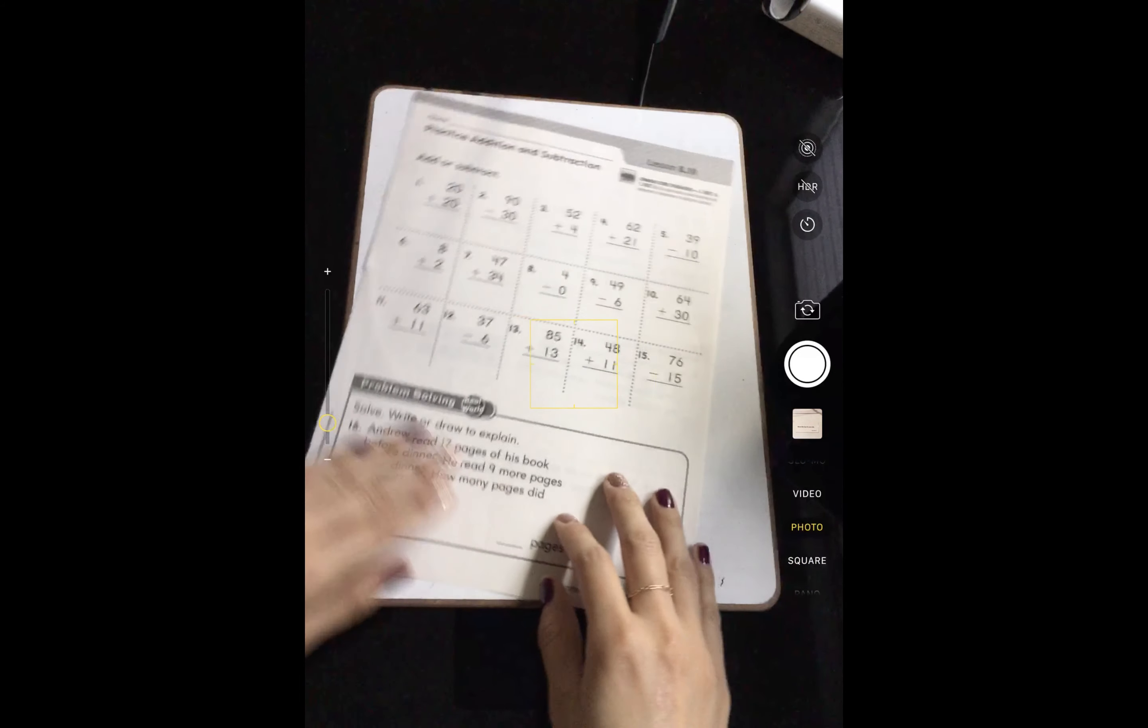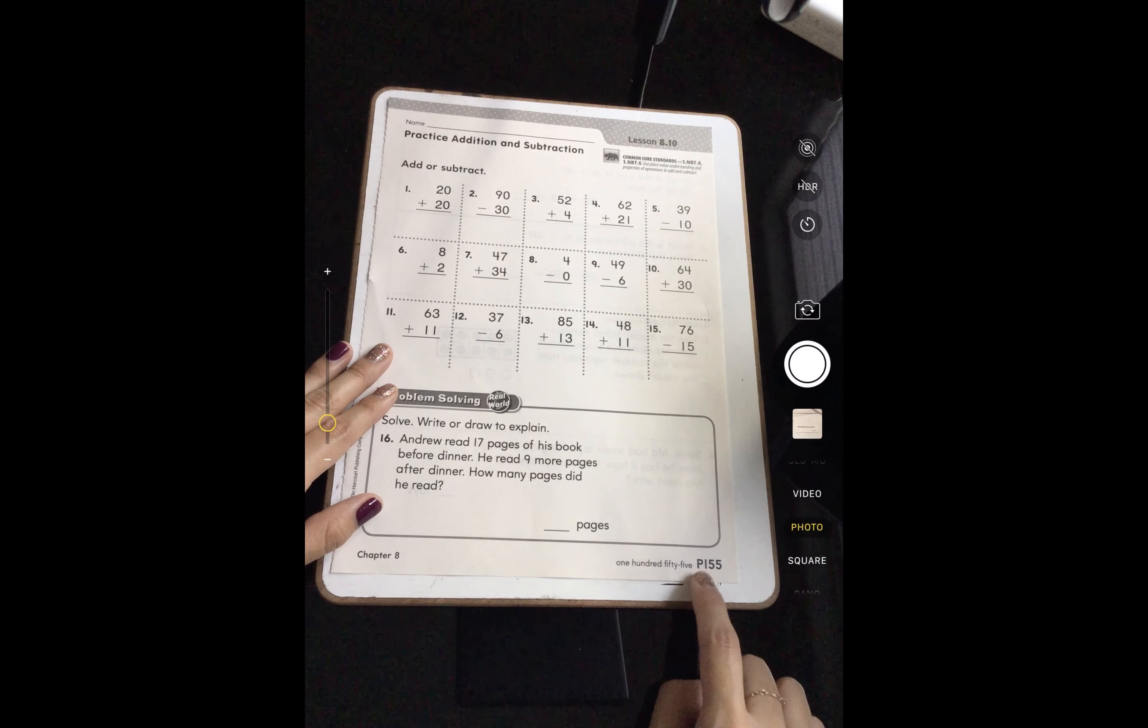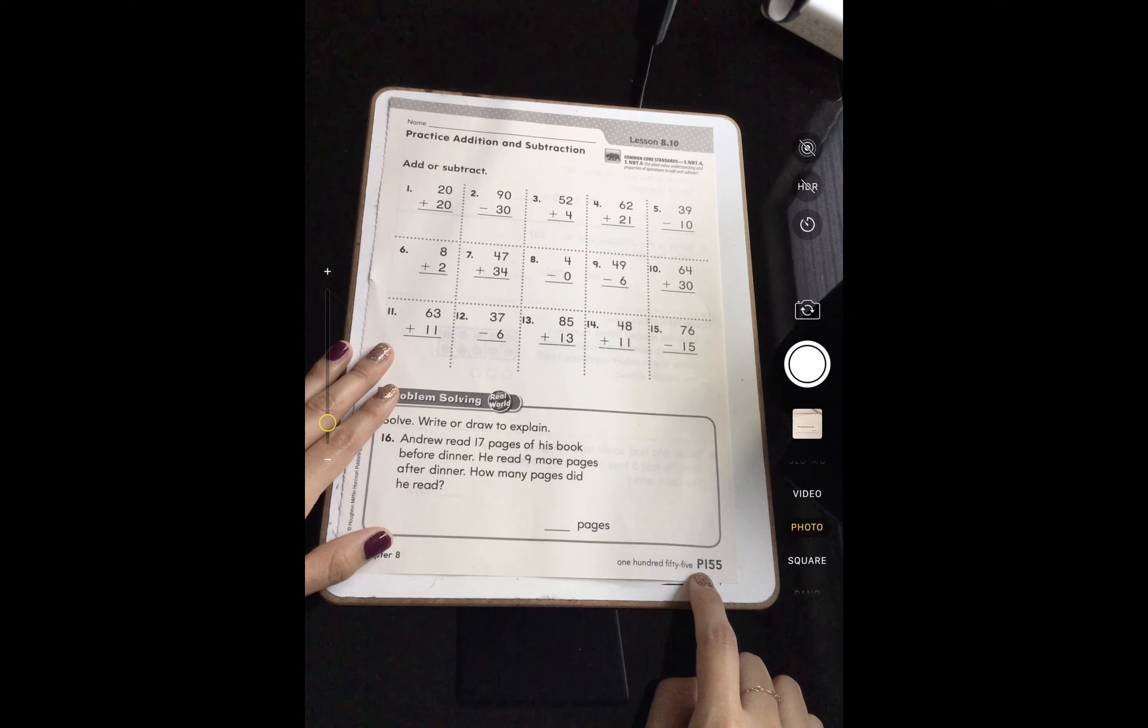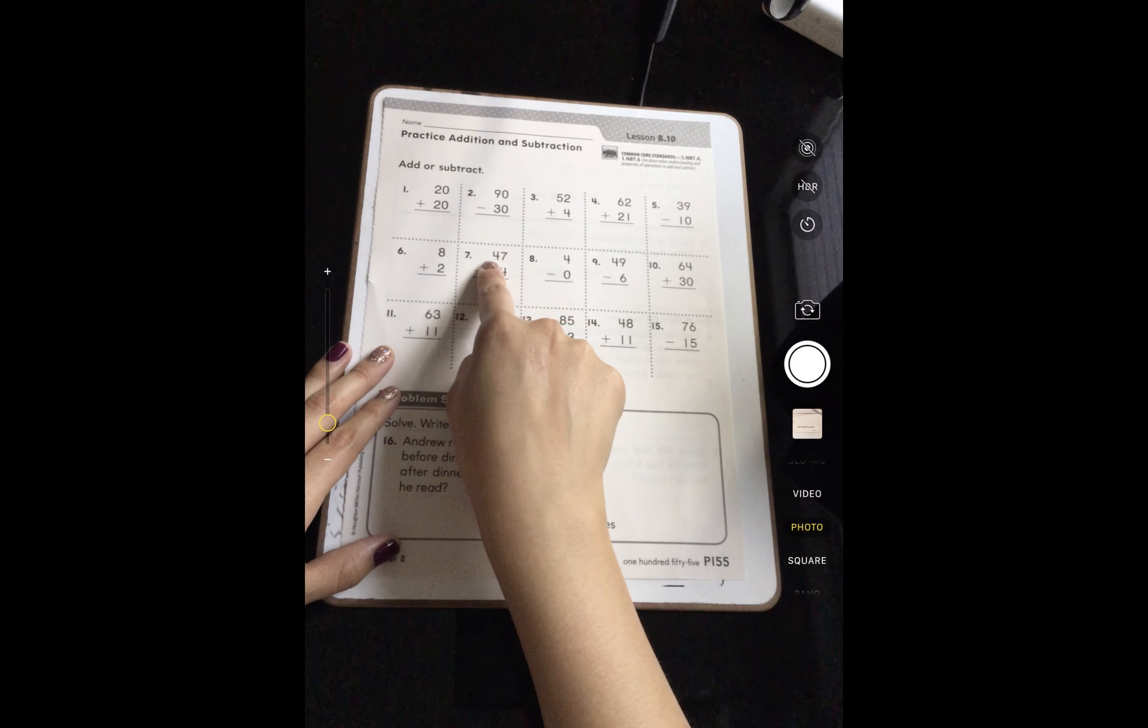We're going to be moving on to time coming this week. So this worksheet here, it is 8.10, and it's from your practice workbook. It's P155, and what you'll be doing is you're going to be working on addition and subtraction going up and down.